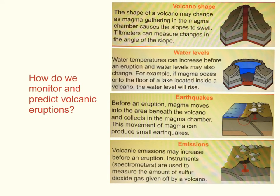We also need to consider how we monitor and predict volcanic eruptions. There are four main ways. Number one is looking at the volcano shape. As magma moves up the vent near the surface, the flanks of the volcano will bulge, causing the angle of slope to change. We measure this using a tilt meter, which is similar to a builder's level — as the slope angle changes, the tilt meter shows a change in level.